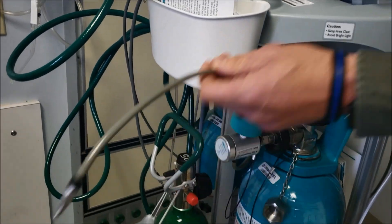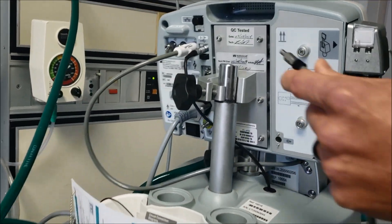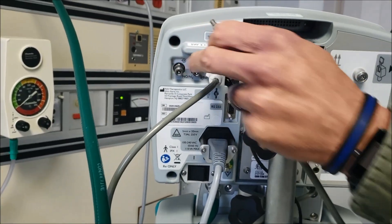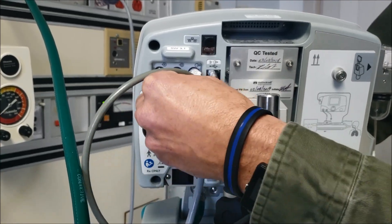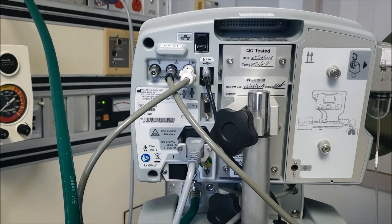And this gray hose that's attached to our regulator plugs into the back of the machine. Either one of these ports is okay. Either this one or this one. It doesn't matter which one. And that's going to be ready then to administer our gas.